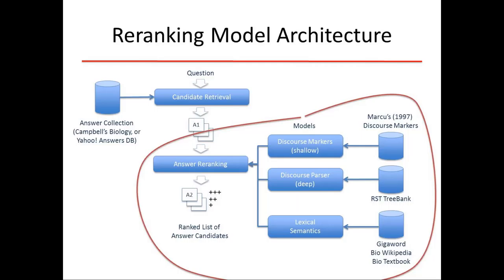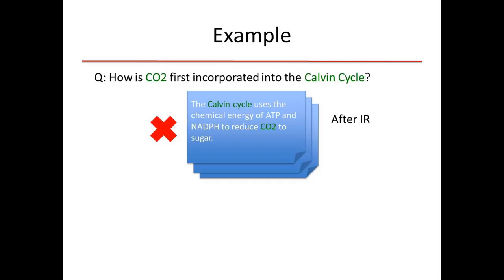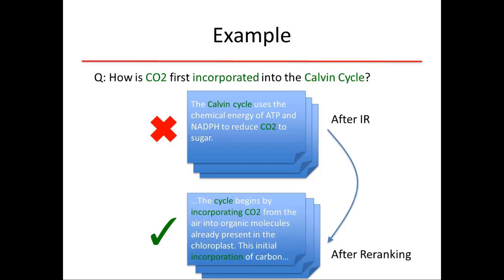For example, given the question 'how is CO2 first incorporated in a Calvin cycle,' the first answer returned by IR looks like a good answer because words are matched — IR is just matching words, not very smart. But it's not actually answering the question. After re-ranking, our system manages to bring the correct answer to the top position.